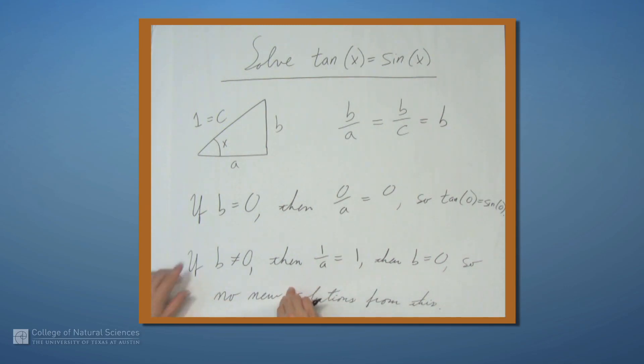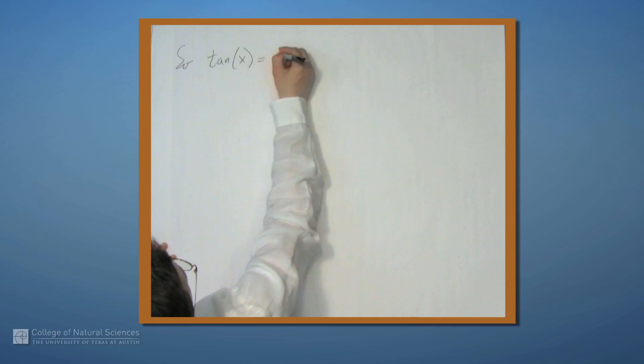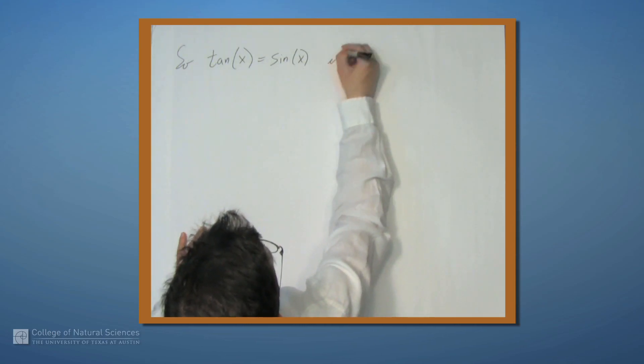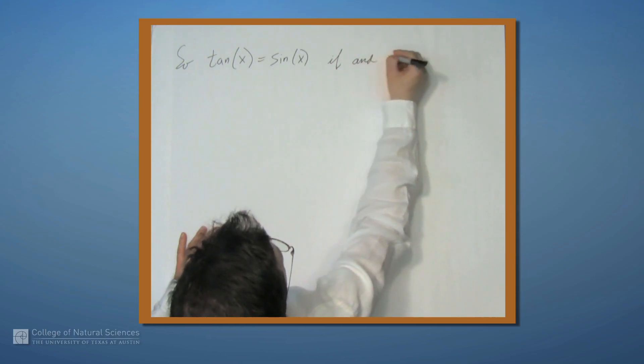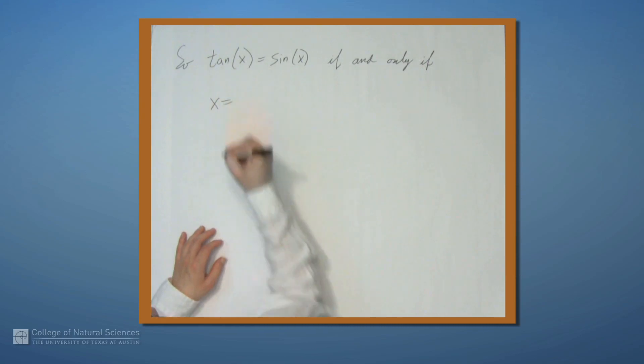So this means that our solutions occur exactly where b is 0. So tangent of x equals sine of x. Well b is 0 either when the line is sticking straight to the right or straight to the left. So tangent of x equals sine of x if and only if x is what?